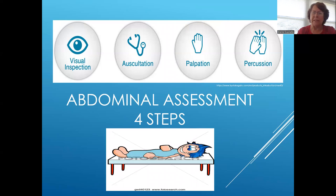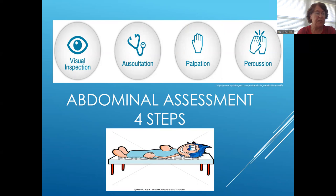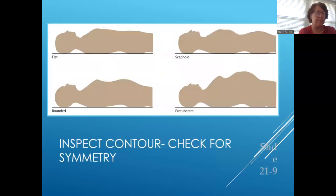When you're doing the abdominal assessment, there are four steps you need to follow: visual inspection, auscultation, palpation, and percussion. To do a good abdominal assessment, the person needs to be laying flat in the supine position with the head relaxed and the arms at the side of the body. This position allows the abdominal wall muscles to relax completely, making your assessment easier. If you don't have an exam table, you can have the student lay on your cot and kneel or squat to do the assessment.